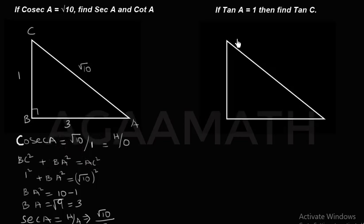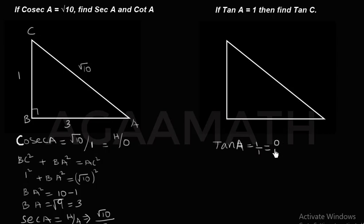Now we have another question: if tan A equals 1, find tan C. We write tan A equals 1 over 1, since the ratio of tan is opposite over adjacent. Let us name this triangle A, B, C. Since tan A equals 1, opposite is 1 and adjacent is 1, making it an isosceles triangle with two equal sides, and by Pythagorean theorem the hypotenuse is root 2 units.